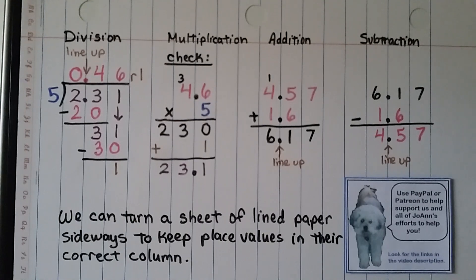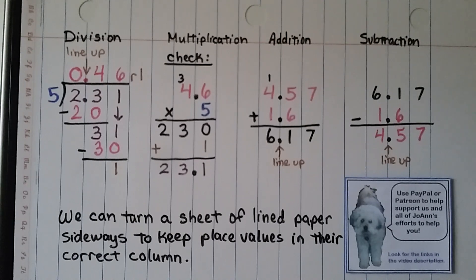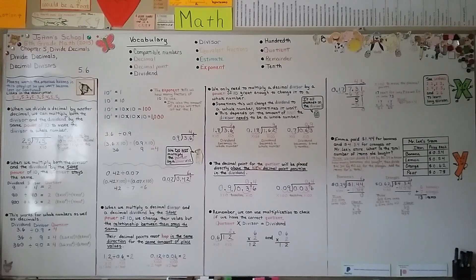One of the biggest mistakes students make is getting their place values mixed up. You can turn a sheet of lined paper sideways to keep place values in their correct column. You can click the description to see the link to PayPal or Patreon to help support the channel. Our next lesson, 5.7, we'll learn to write a zero in the dividend when dividing and the dividend isn't large enough. Hope to see you there — have a wonderful day!